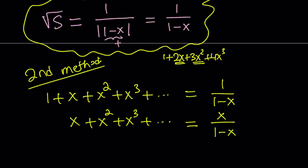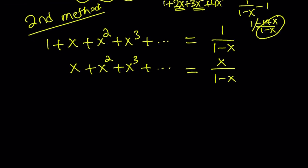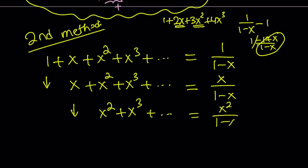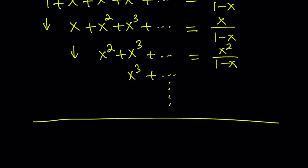You could also write this as 1 over 1 minus x minus 1. If you make a common denominator, you get 1 minus 1 plus x divided by 1 minus x — it turns out the same either way. The next thing I'm going to add starts with x squared, because I need 1 plus 2x plus 3x squared. That gives x squared divided by 1 minus x. This pattern continues with x cubed over 1 minus x, so on and so forth.